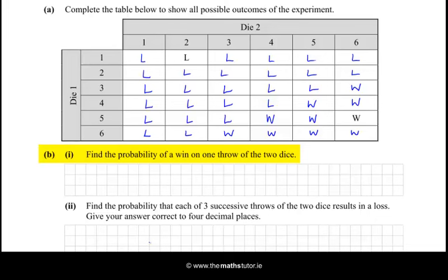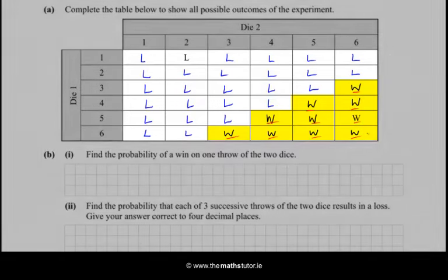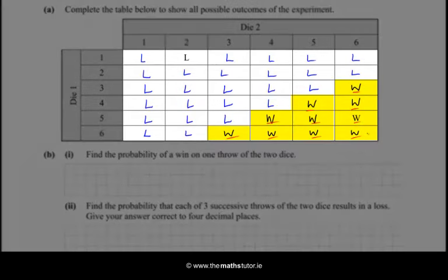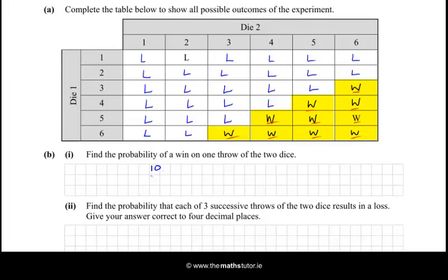Now find the probability of a win on one throw of the two dice. We just need to add up all of the wins and there are 1, 2, 3, 4, 5, 6, 7, 8, 9, 10 of them out of a possible sample space of 36. So the probability is therefore 10 over 36 which could be simplified to 5 over 18.